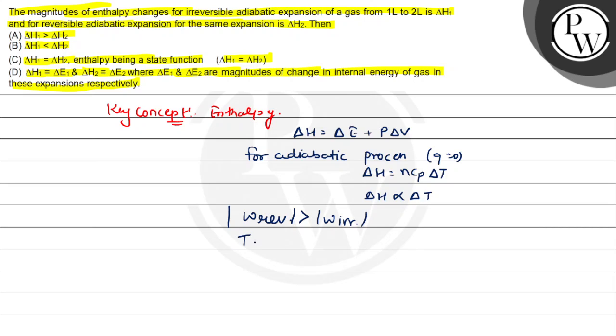Temperature final for the reversible process is always less than temperature final for the irreversible process. That means ΔT reversible is greater than ΔT irreversible.